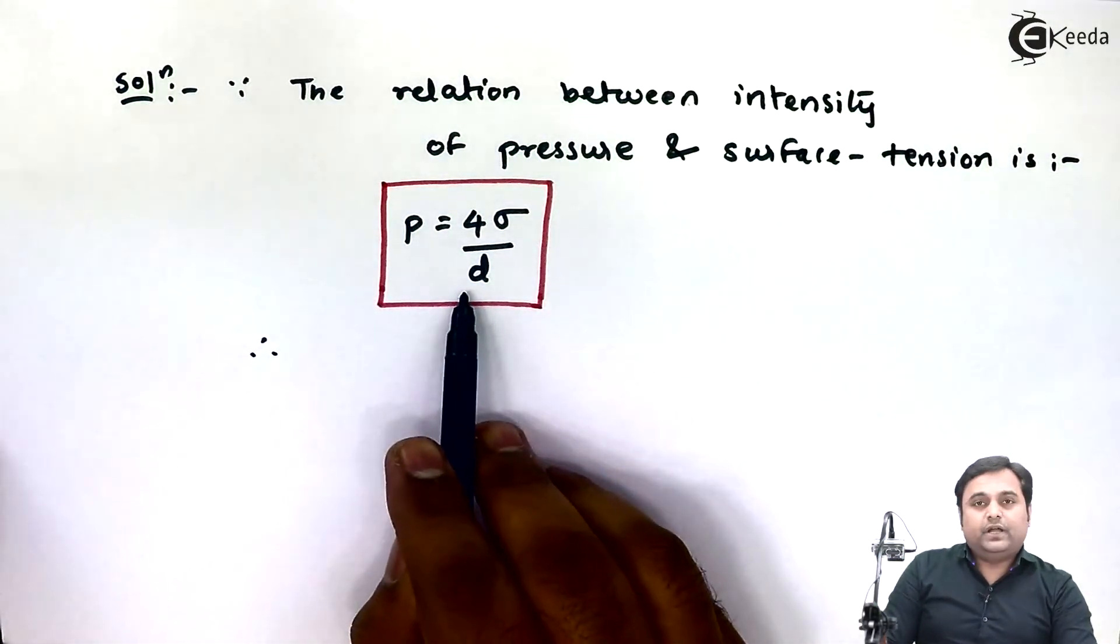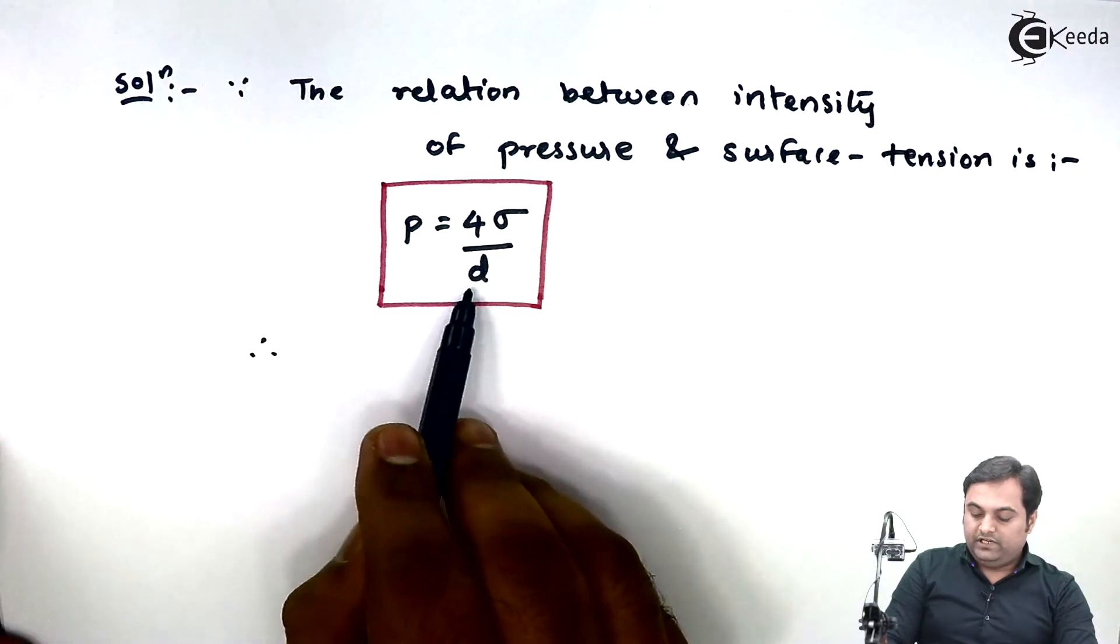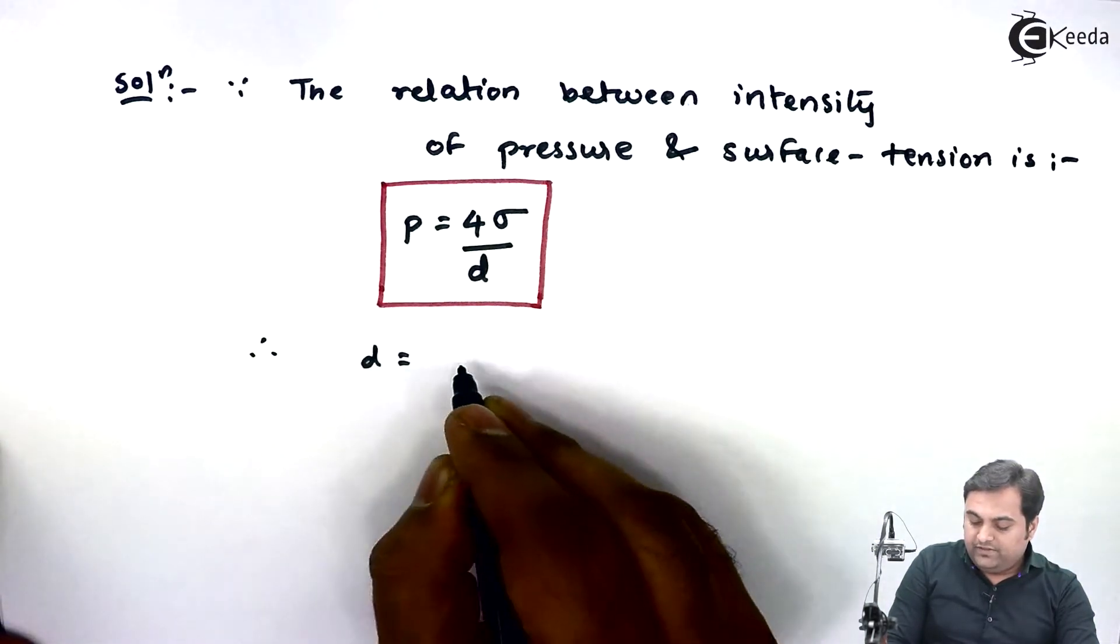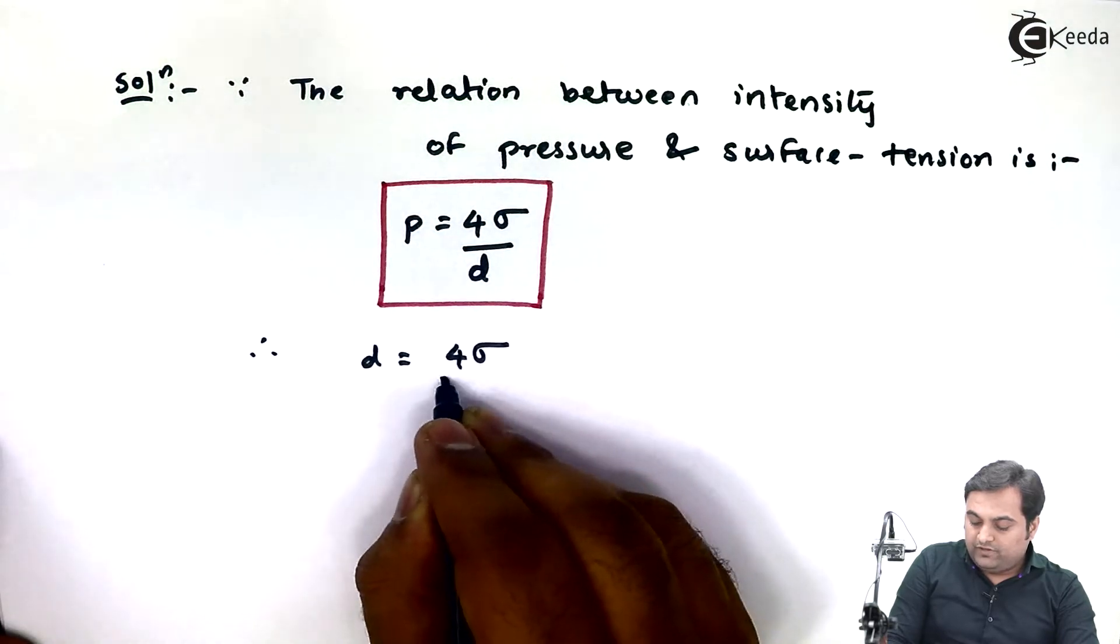Therefore, here we need to calculate the diameter, so I'll keep d on one side: d equals 4 sigma upon P.